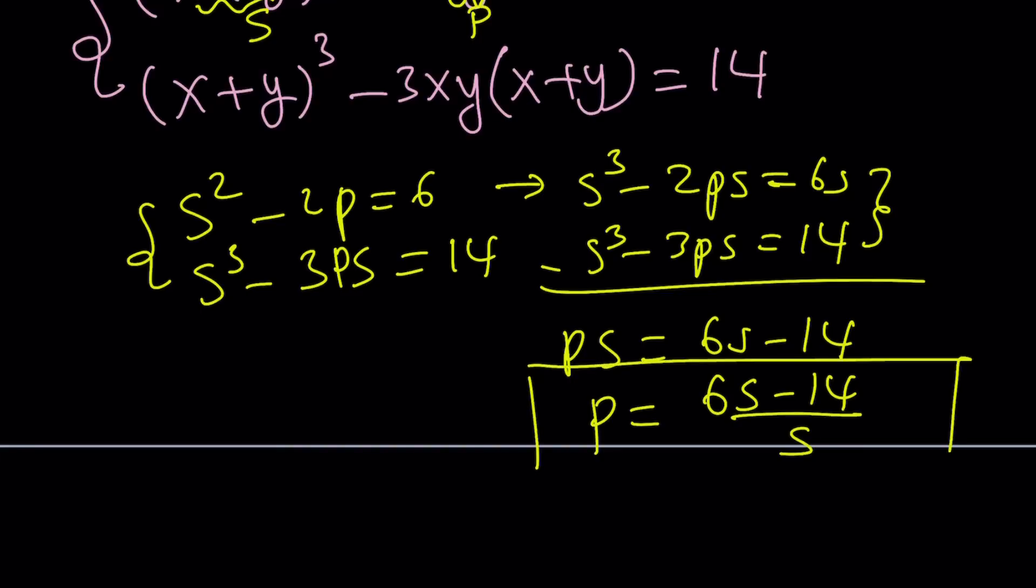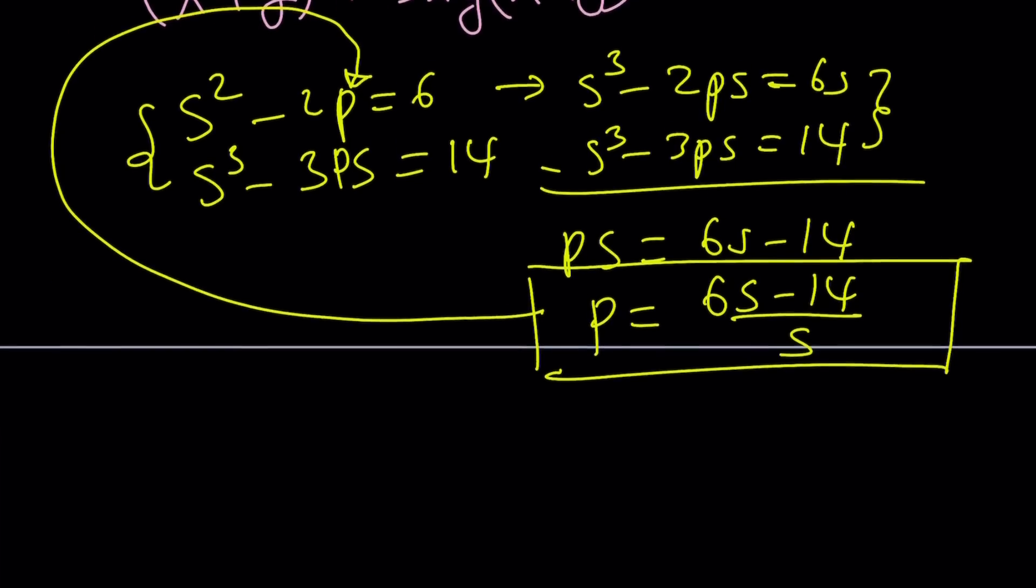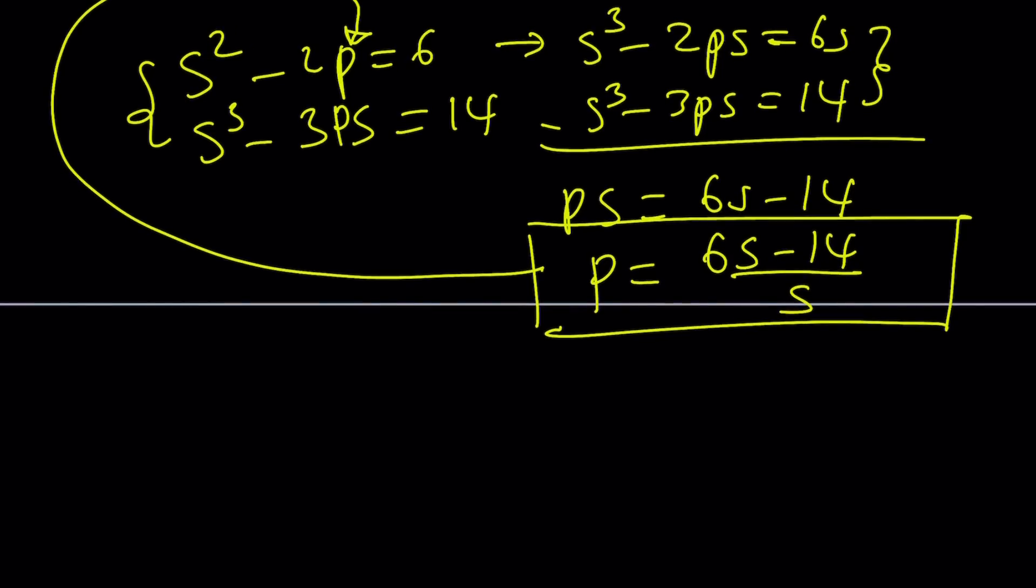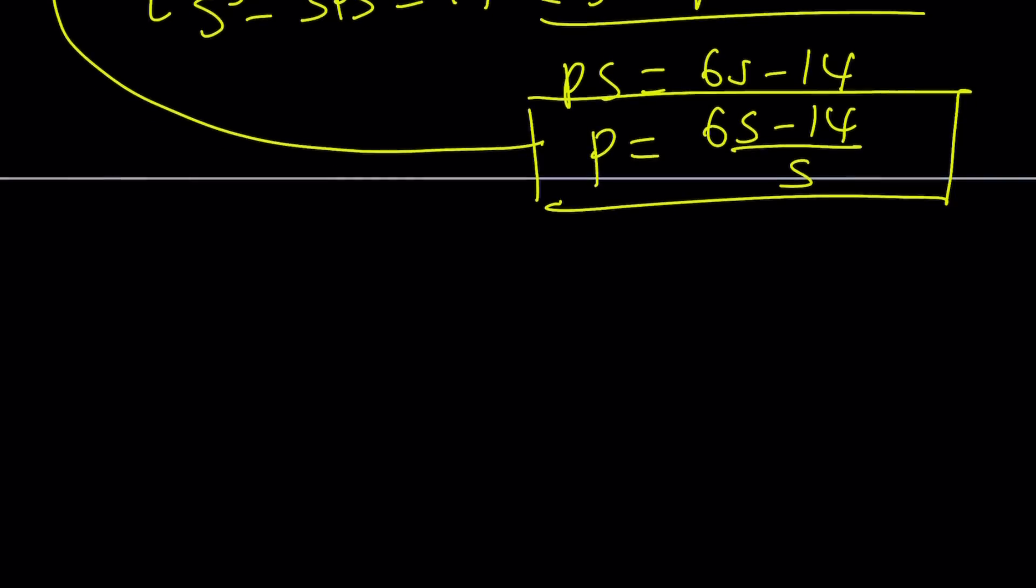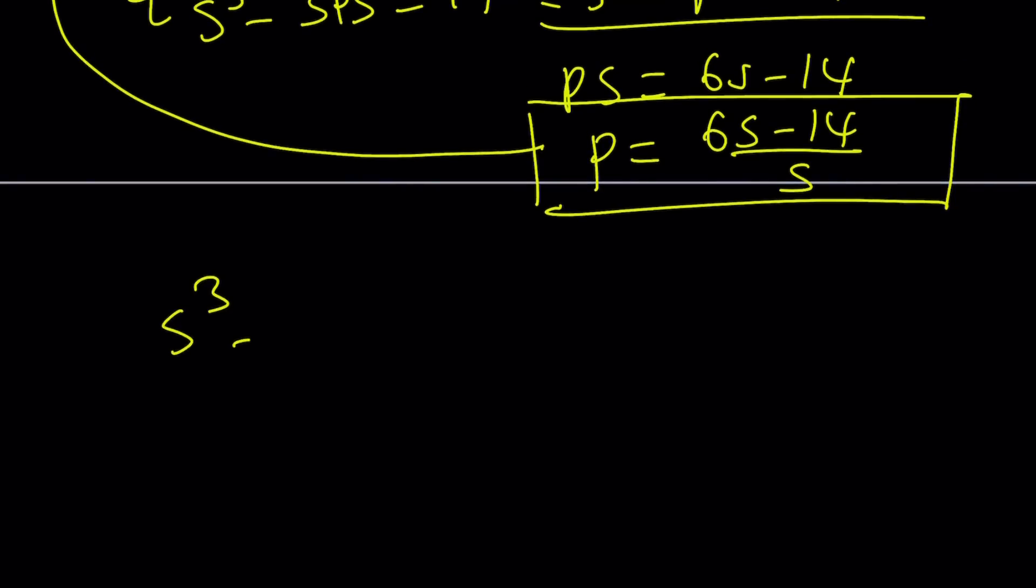Great. Now, we can go ahead and plug this into one of the equations. Guess which one? The first one, not the cubic one. So you want to go ahead and plug it in here. Simplify, and you're going to end up with the following. The resulting equation is s cubed minus 18s plus 28 equals 0. And guess what? This shouldn't be too hard to guess.